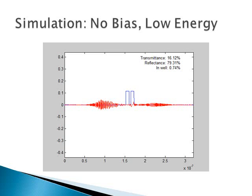Finally, the reflectance is calculated by dynamically evaluating the integral of the probability density function, as described earlier, over the space up until the first barrier. The transmittance and in-well percentages are calculated similarly.